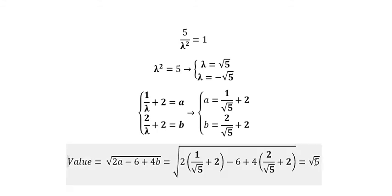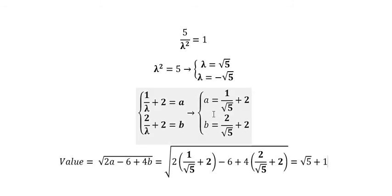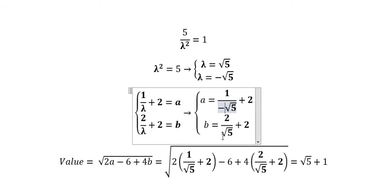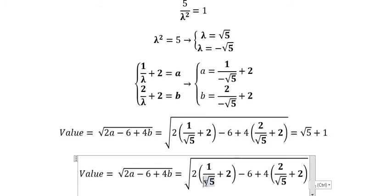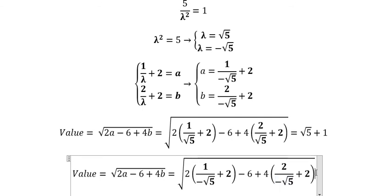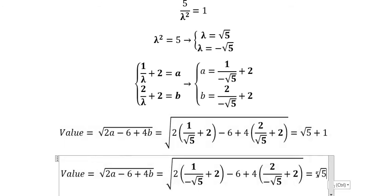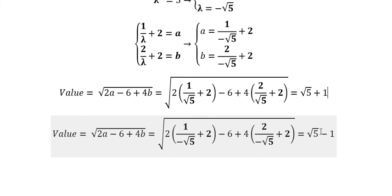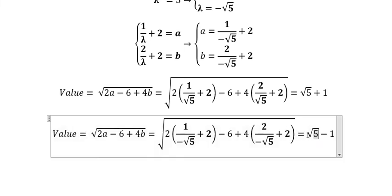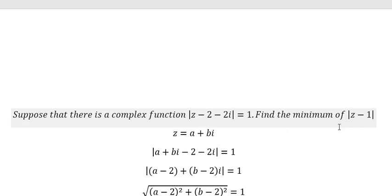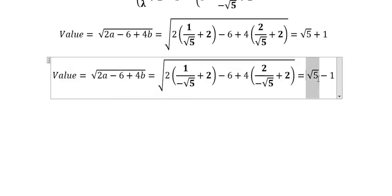For the second solution, lambda equals negative the square root of 5. We substitute in to find a and b, calculate |z-1|, and get the square root of 5 minus 1. Comparing both values, the minimum of |z-1| equals the square root of 5 minus 1.